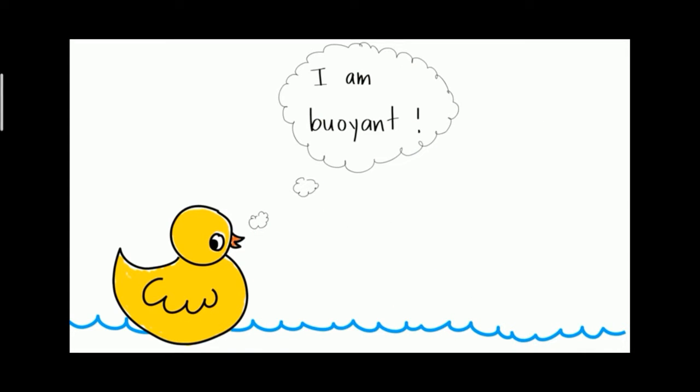If something is able to float, it is called buoyant. This aquatic bird is buoyant — it can float on water.